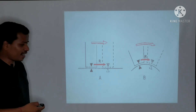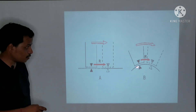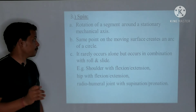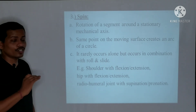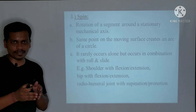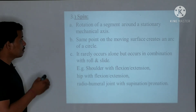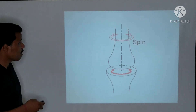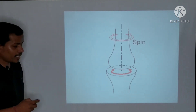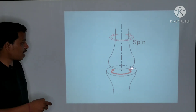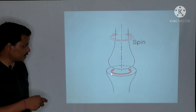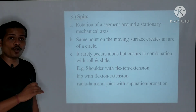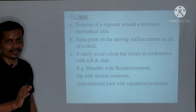Spin is the rotation of a segment around a stationary mechanical axis. The same point on the moving surface creates an arc of a circle — shown in red. Spin rarely occurs alone; it occurs in combination with roll and slide.